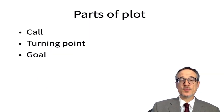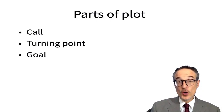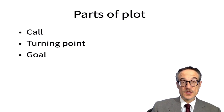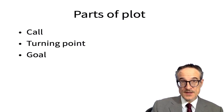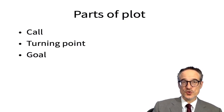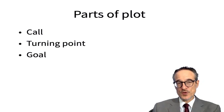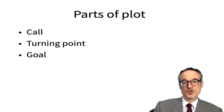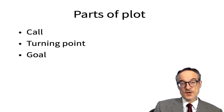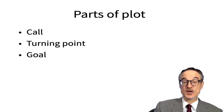The parts of a plot: one part is sometimes called a call. This is when the hero in the story is given a calling — is told what they need to do. Often stories have a turning point, where things go from good to bad, or from bad to worse. And a plot needs a goal, so somewhere in the plot there's a goal that the hero or heroine is trying to reach.